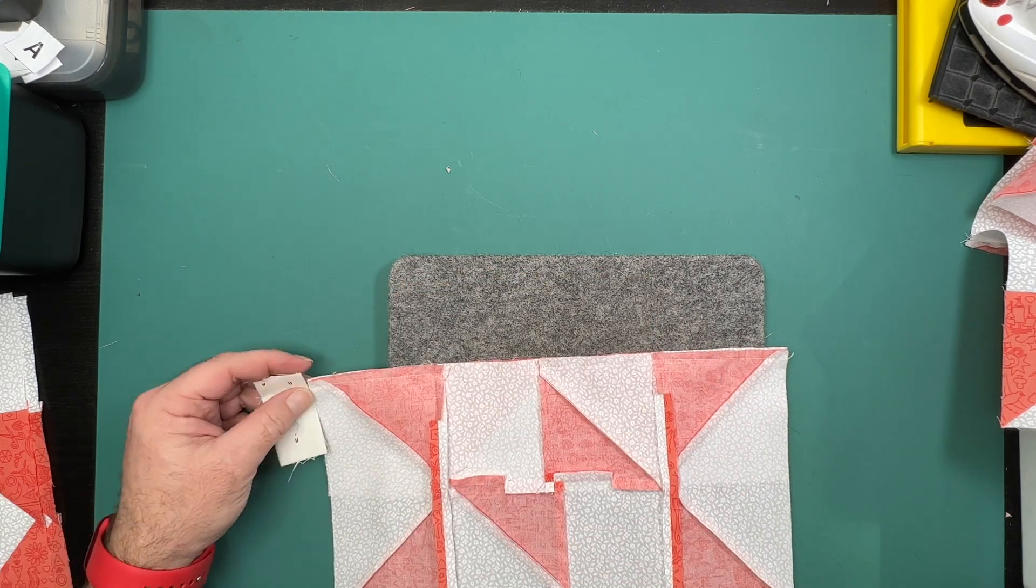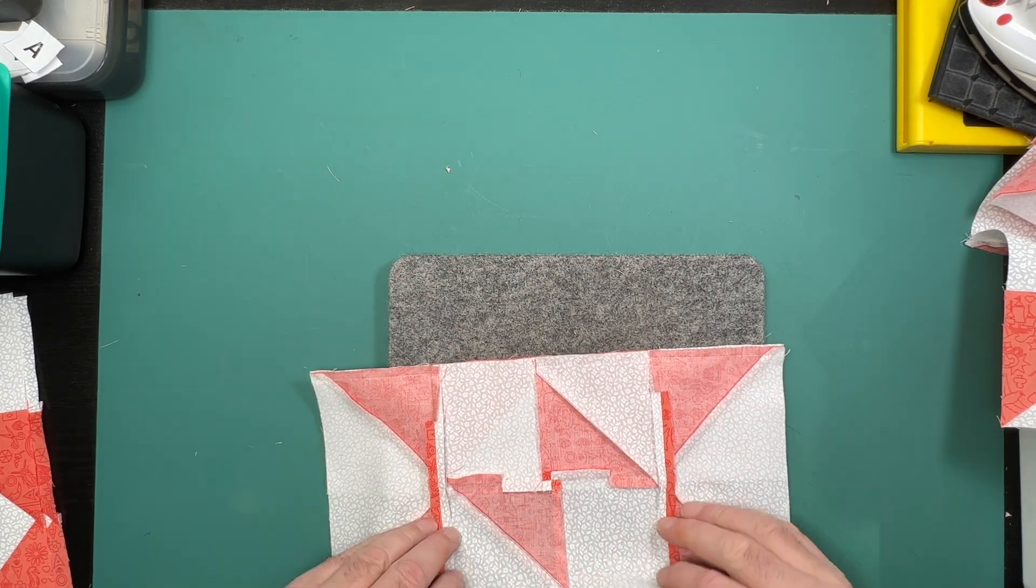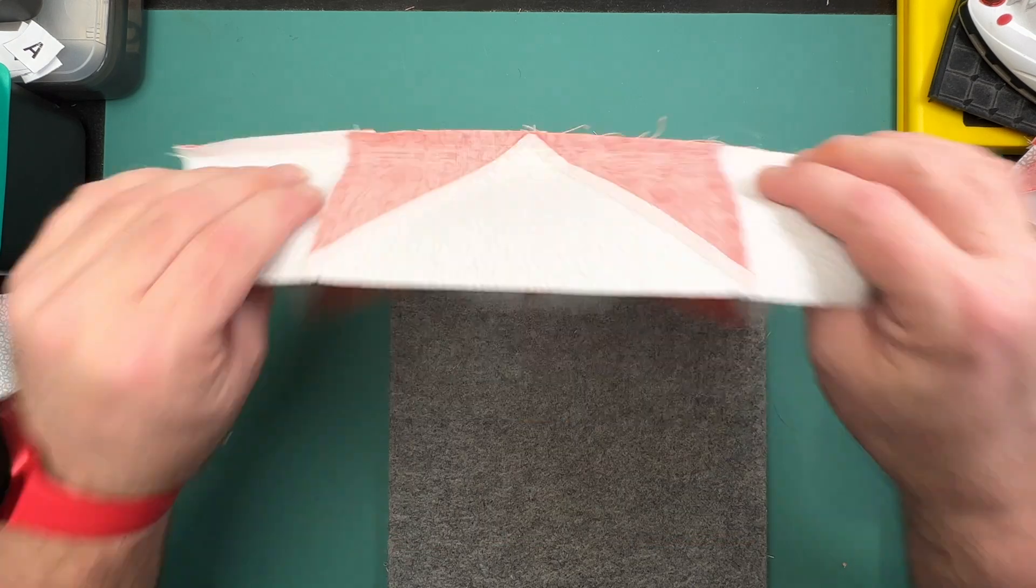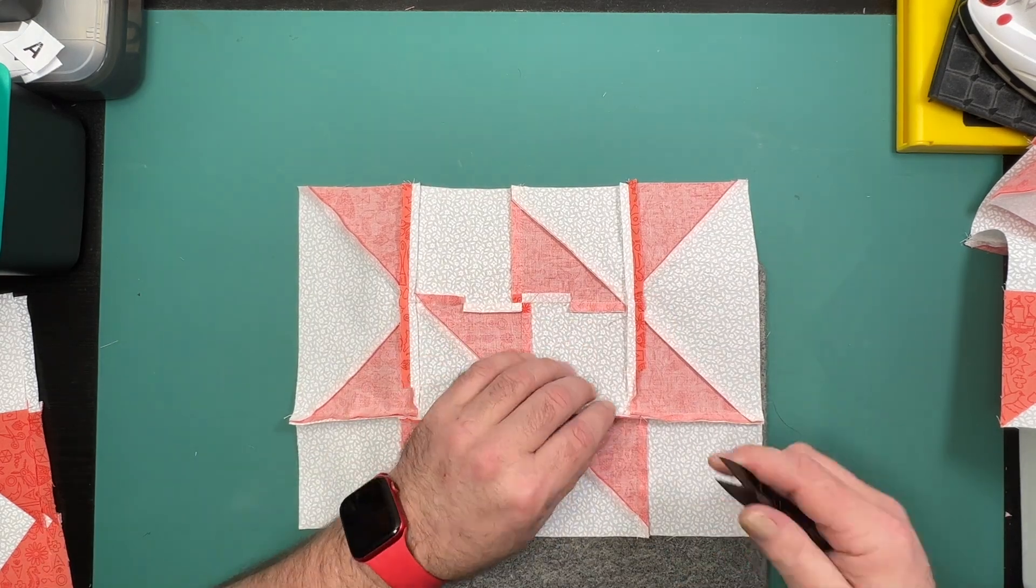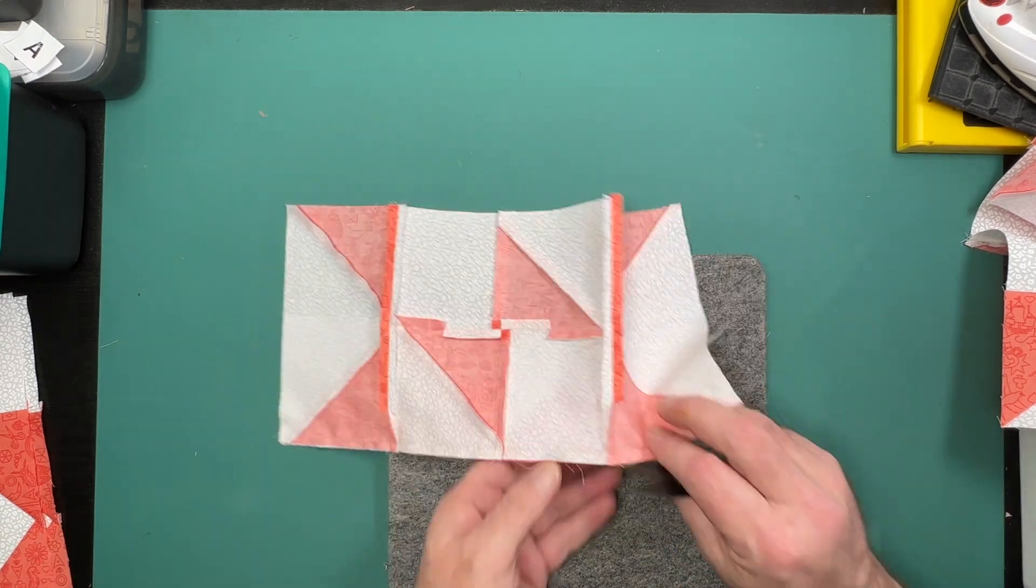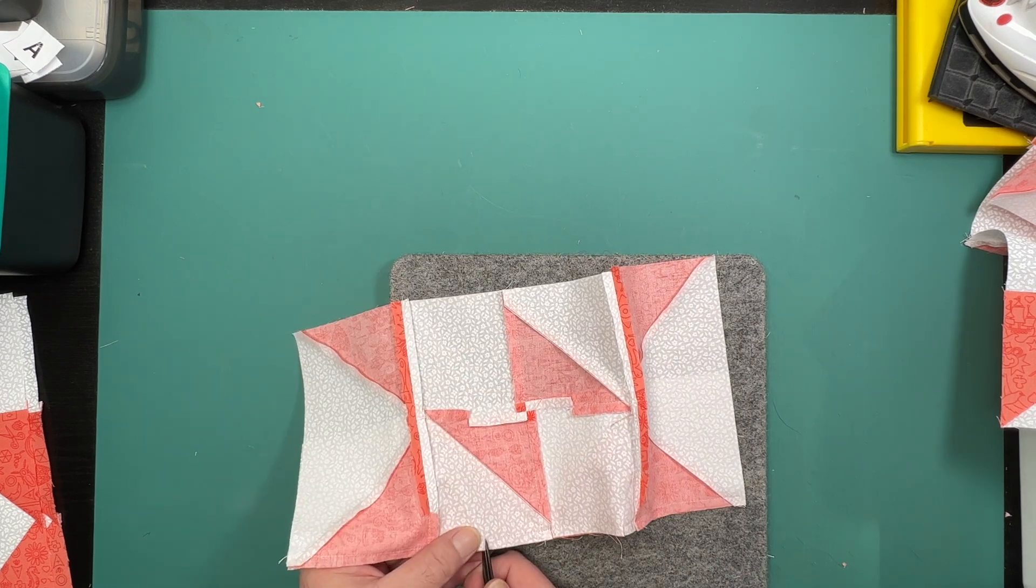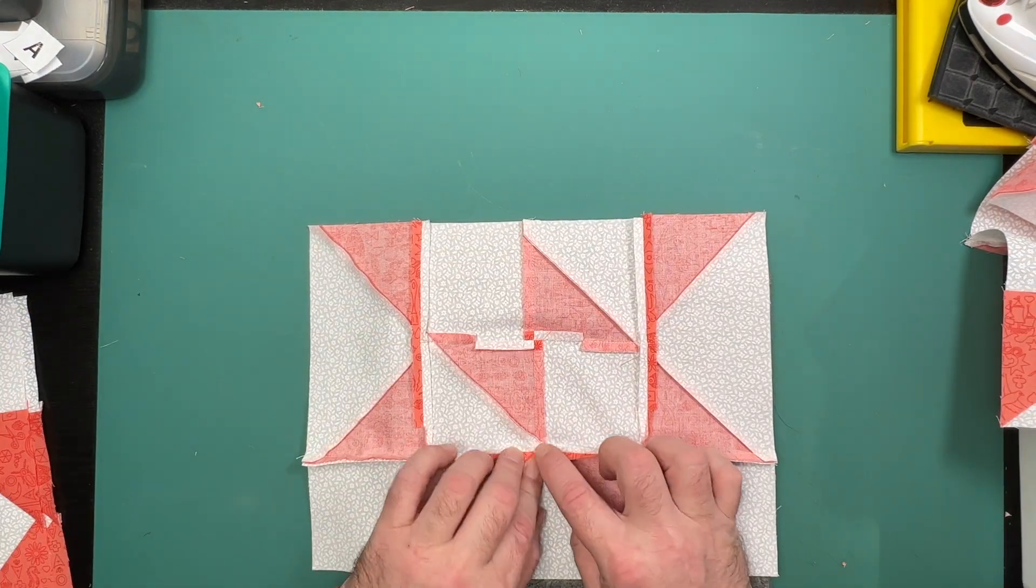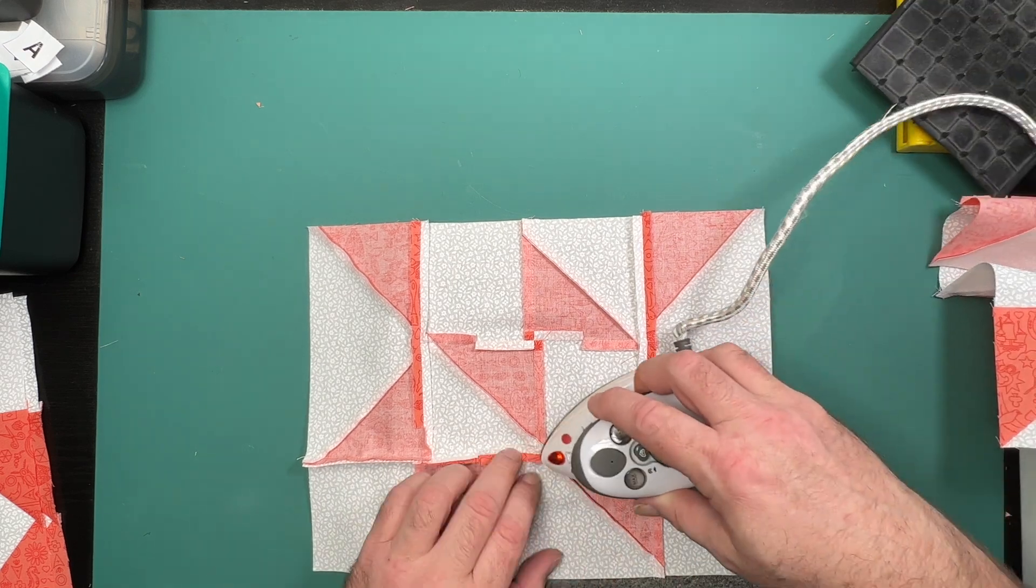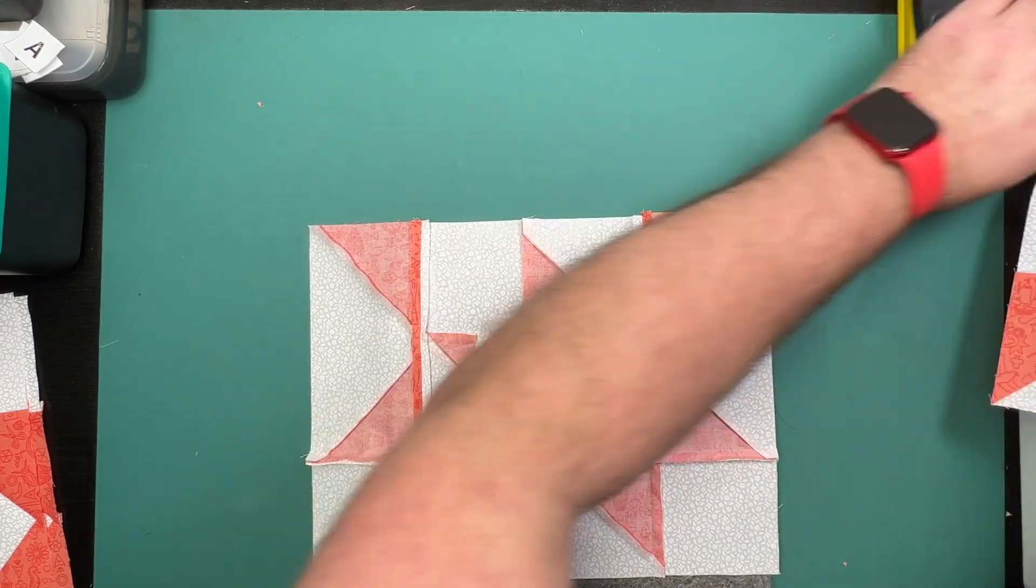We'll treat the horizontal seams the same way we did on the vertical, and we will clip into our seam allowance on either side of our peak in the middle. Press that part where the peak is open, and on the other ones they will press out towards the solid square. Do this for both of these seams and our block for this week will be done.